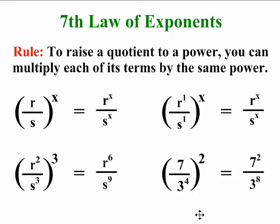One more example with numbers as basis. Here we have 7 over 3 to the power of 4 as a quotient, and the whole quotient is being brought to the power of 2. If we remove the bracket, then 7 has the exponent 1, and 1 times 2 is 2, so our numerator is 7 squared.